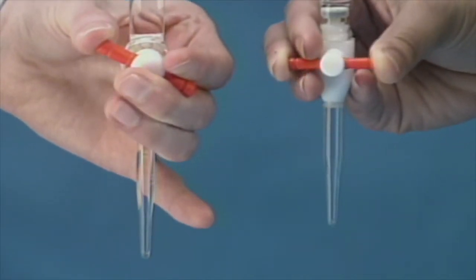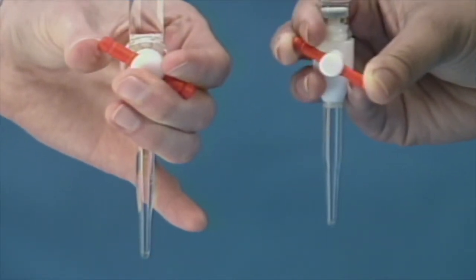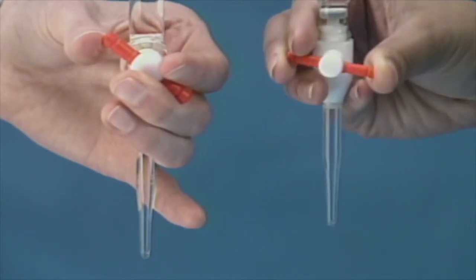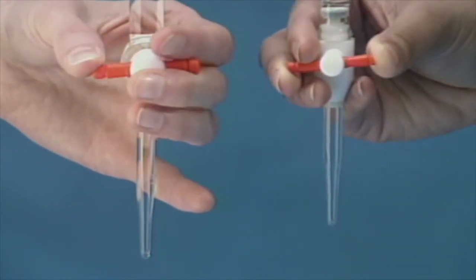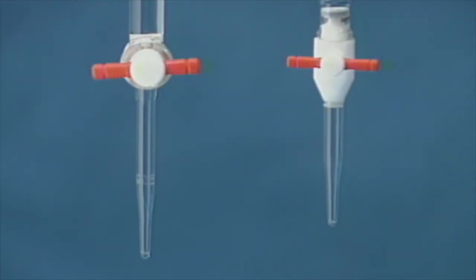The stopcock is fully closed when the handle is horizontal, but as shown here, there is a fairly wide range of off or closed positions, which vary from burette to burette.